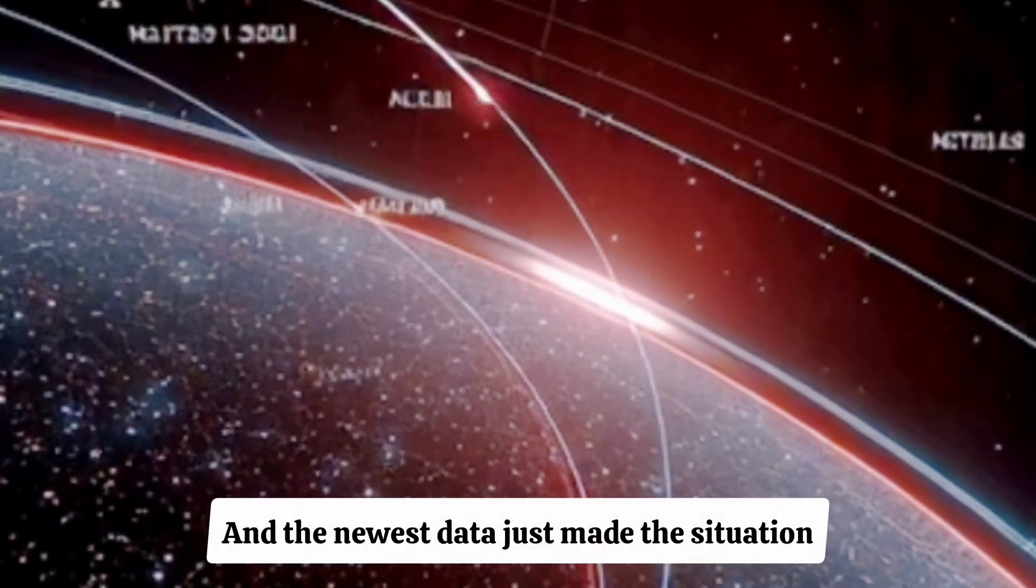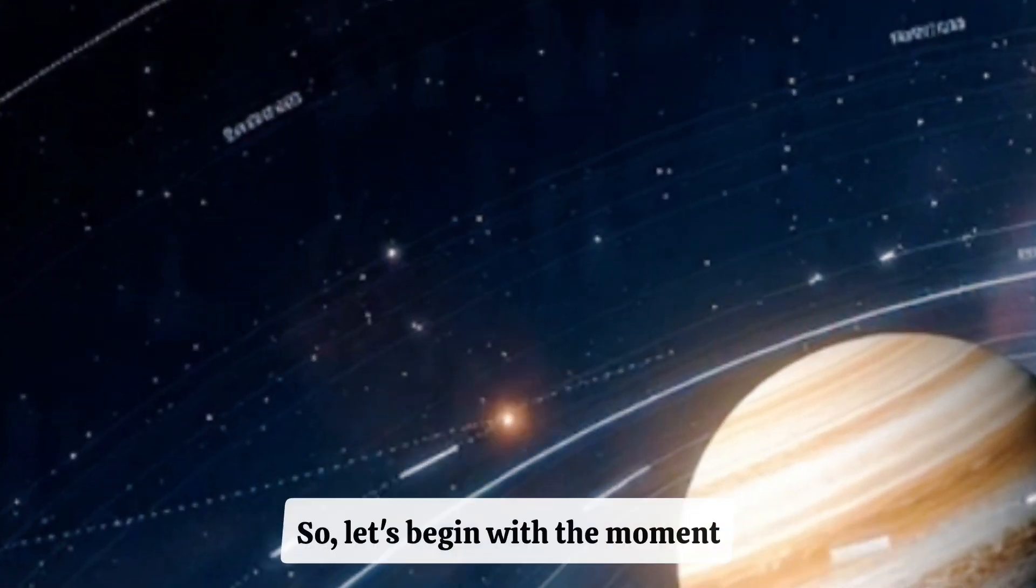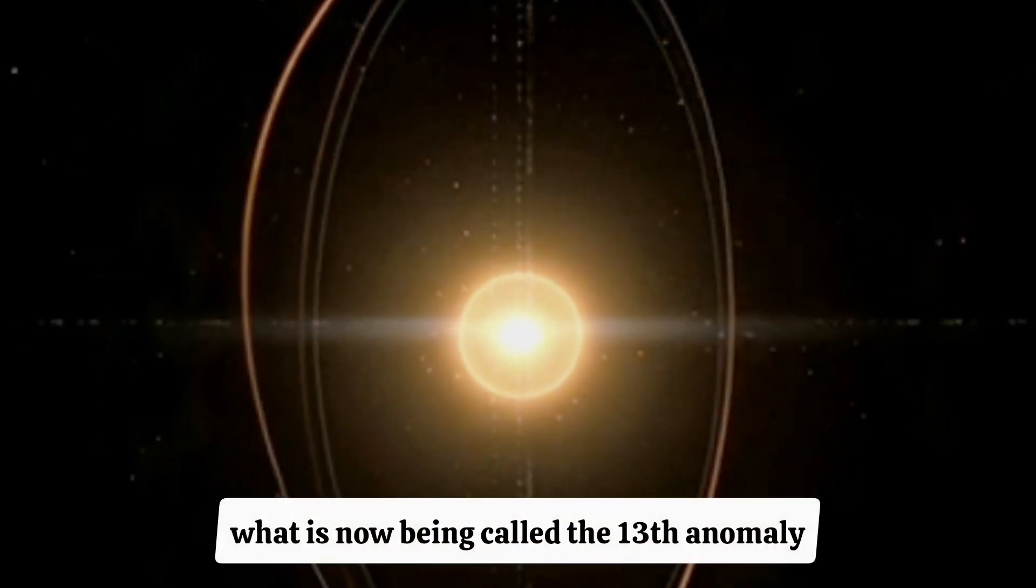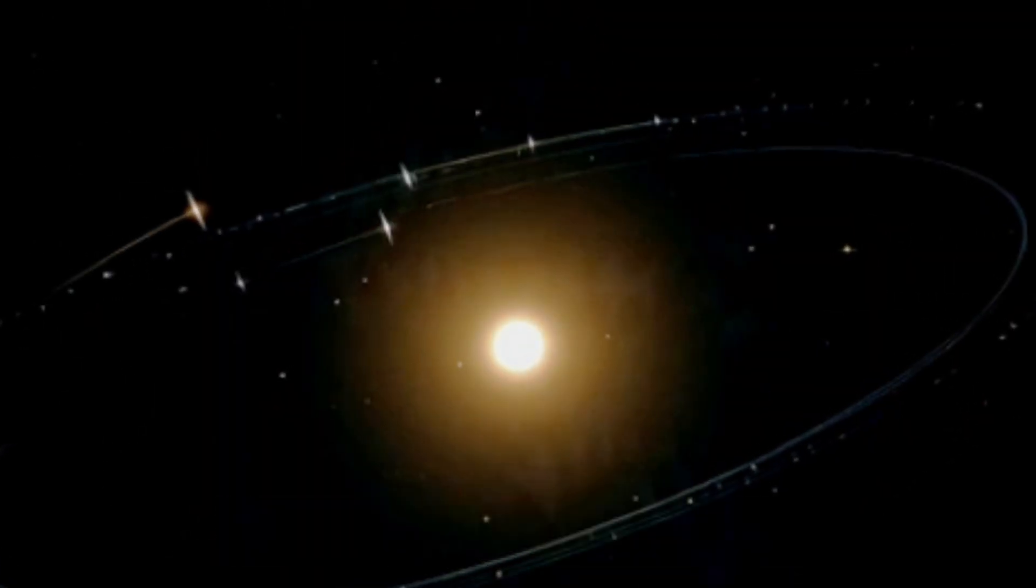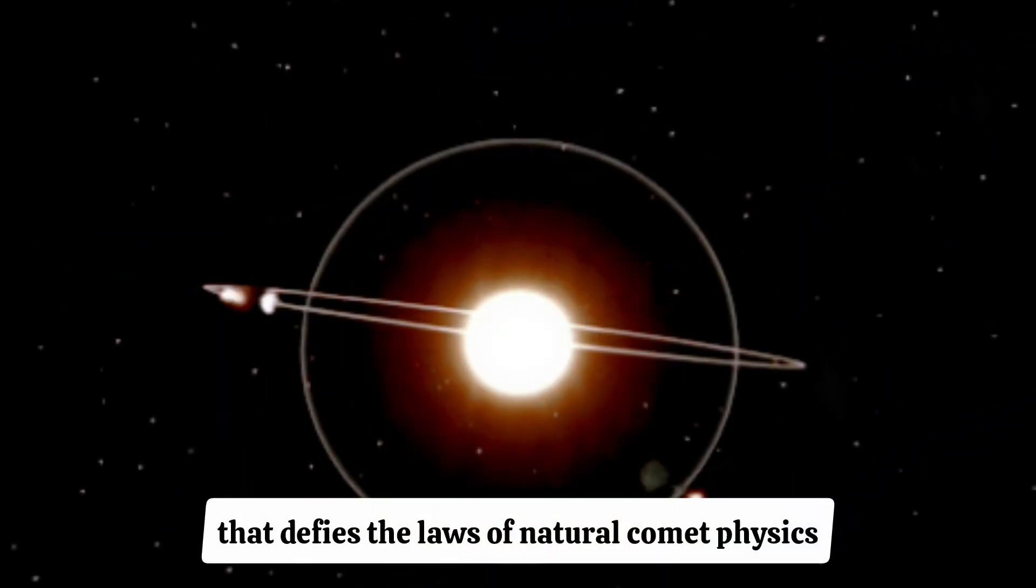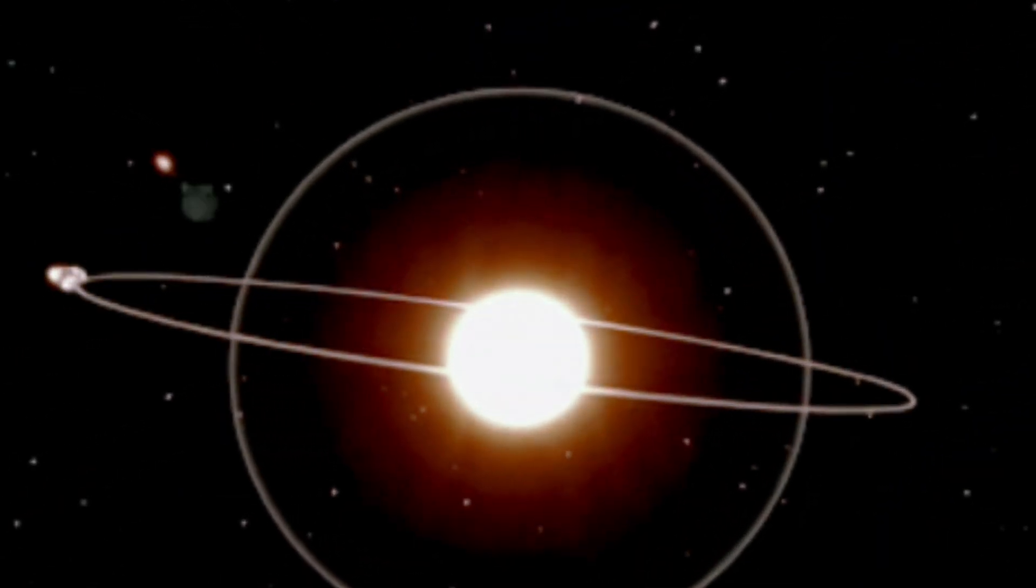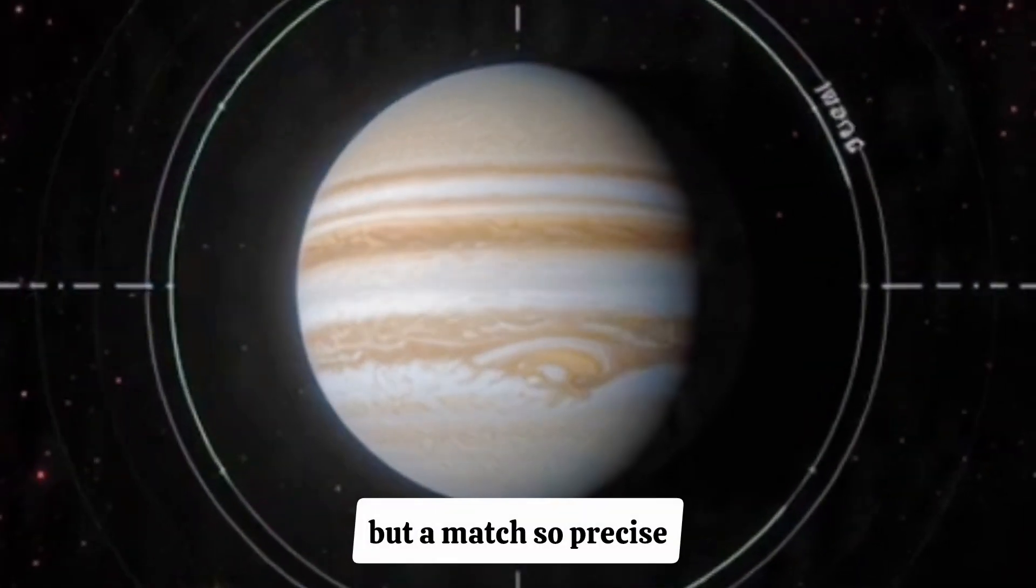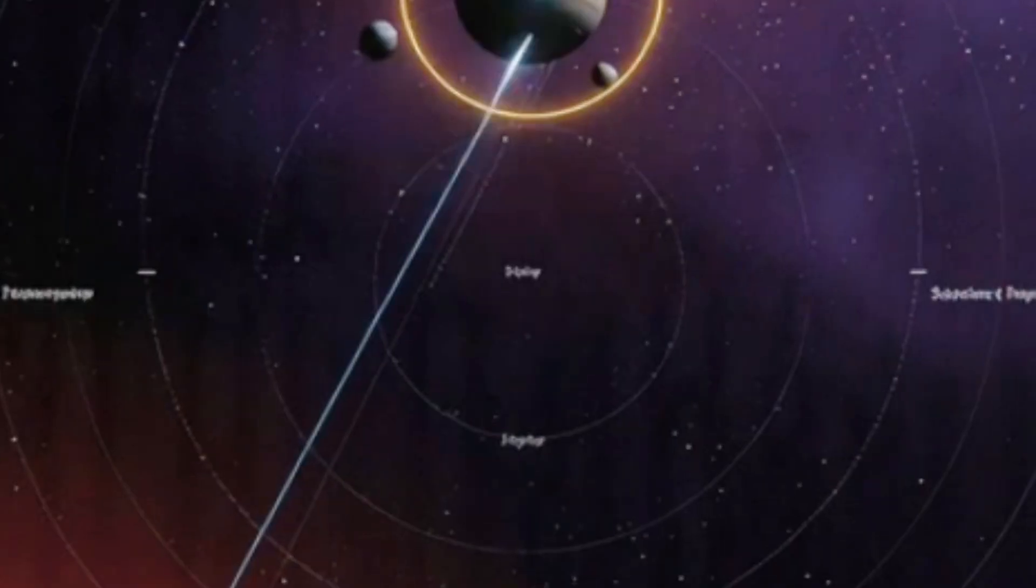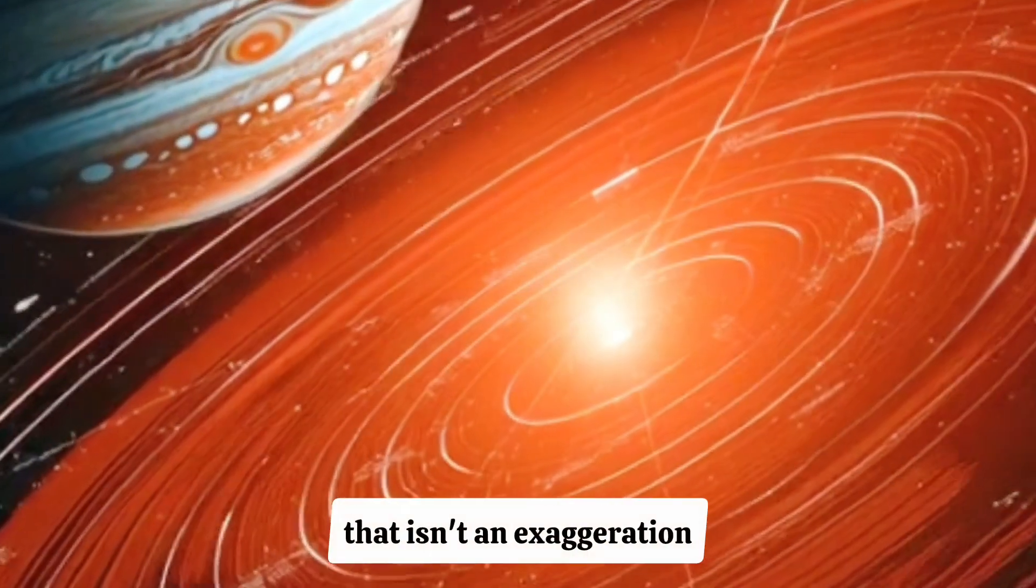And the newest data just made the situation a thousand times more confusing. So let's begin with the moment that triggered this entire wave of panic. The discovery of what is now being called the 13th anomaly, a mathematically perfect trajectory match that defies the laws of natural comet physics. Not 10%, not 5%, not 1%, but a match so precise that if it happened by accident, you'd have better odds of being struck by lightning while winning a lottery jackpot. And just so we're clear, that isn't an exaggeration.